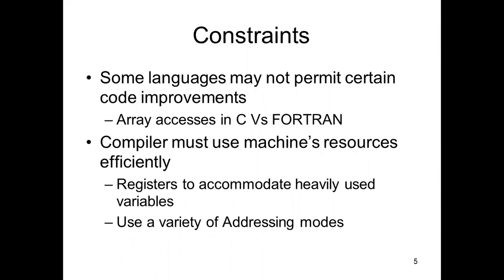There are some constraints during optimization. Some languages may not permit certain code improvements — for example, arrays in C language. You cannot perform any optimization on the array. Similarly, the compiler must use machine resources efficiently. For example, a compiler should accommodate heavily used variables in registers and also use a variety of addressing modes. The selection of addressing mode is also a way to optimize the code.